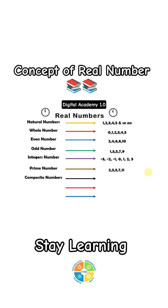Composite number. Are those numbers which has more than 2 divisibles. For example, 4, 6, 8, 9 and so on.